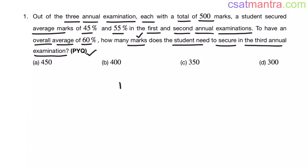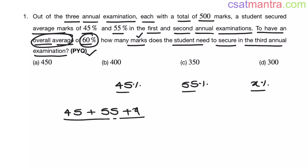The student secured 45% in the first annual exam and 55% in the second annual exam. Let's assume he secured X percent in the third annual exam. Once we know the percentage, we can calculate the marks. Now, to have an overall average of 60%, the overall average is the sum of the percentages divided by the number of percentages. So 45 plus 55 plus X divided by 3 equals 60.